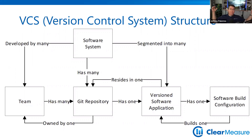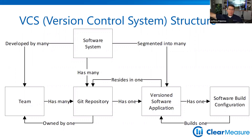Then if you have 10 or 20 different Git repositories because you have 10 or 20 software applications, you're going to have 10 or 20 DevOps environments and pipelines — another instance of all these things for each one.